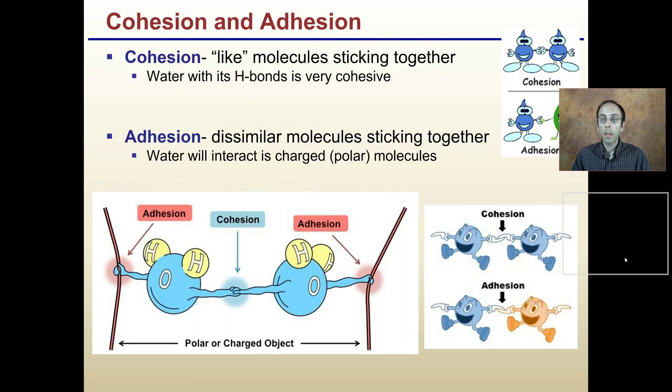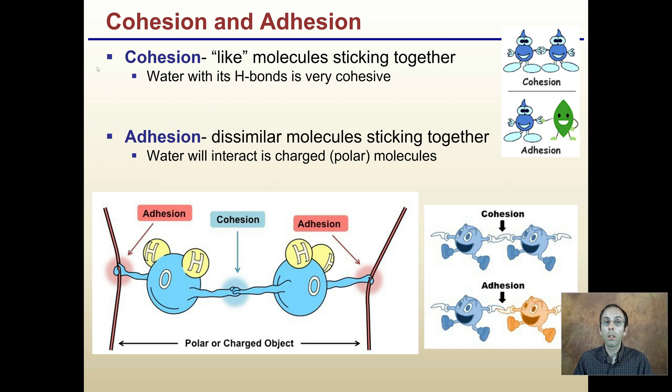This adhesion and cohesion that I mentioned: keep in mind that cohesion is like molecules sticking together. We see the two water molecules sticking together because of hydrogen bonds; it's cohesive. In adhesion, dissimilar molecules are sticking together. Water will interact and is charged with polar molecules. Here we have the polarity of the water adhering or sticking to the outside surface. It could be water to the surface of a leaf or water to the interior parts of the xylem. It's that kind of water attaching or adhering, like a piece of tape adhering to the wall or desk, sticking to something other than itself.